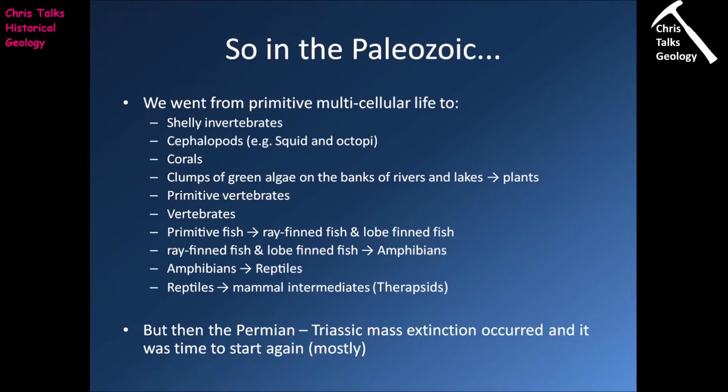We also saw the appearance of coral-like organisms: the Archaeocyathids of the Cambrian, then the Stromatoporoids in the Ordovician, and then the Tabulate and Rugose corals later on. Of course all these organisms formed quite extensive reef deposits, especially during the Paleozoic, because we had so many nice relatively shallow, relatively warm epeiric seas which are absolutely perfect for reef formation.